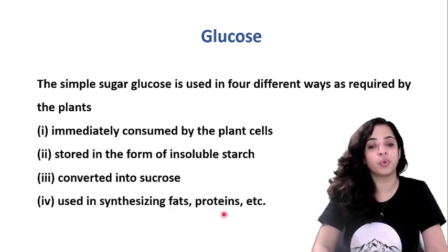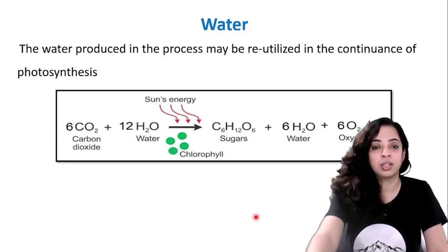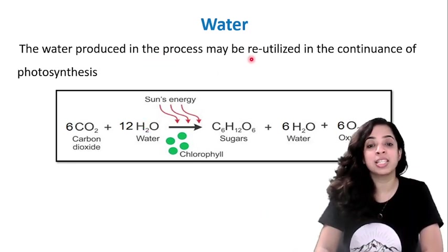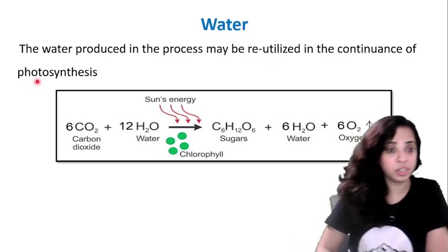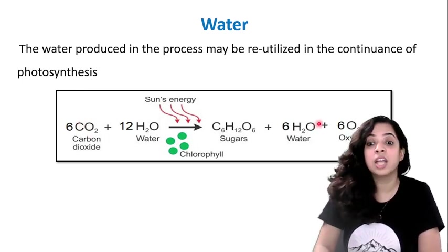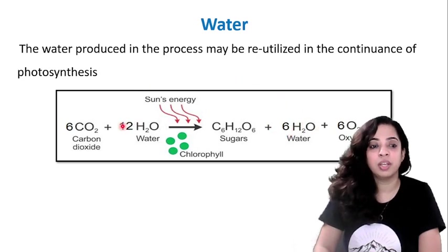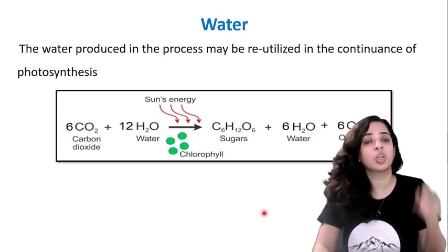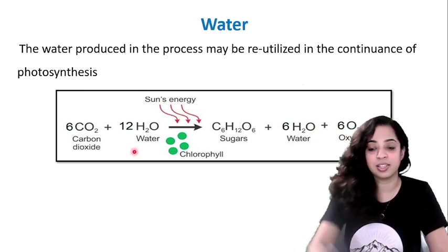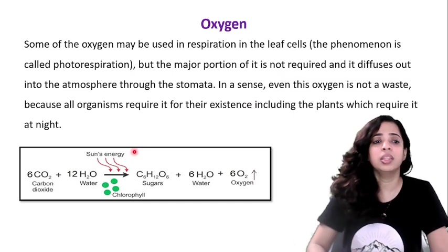The second product is water. Water produced in the process may be reutilized for the continuation of photosynthesis. Students, this reaction should be learned by heart. The water molecules produced are reused for the continuation of photosynthesis, so even if less water is absorbed from the roots, the water produced here can be reutilized.